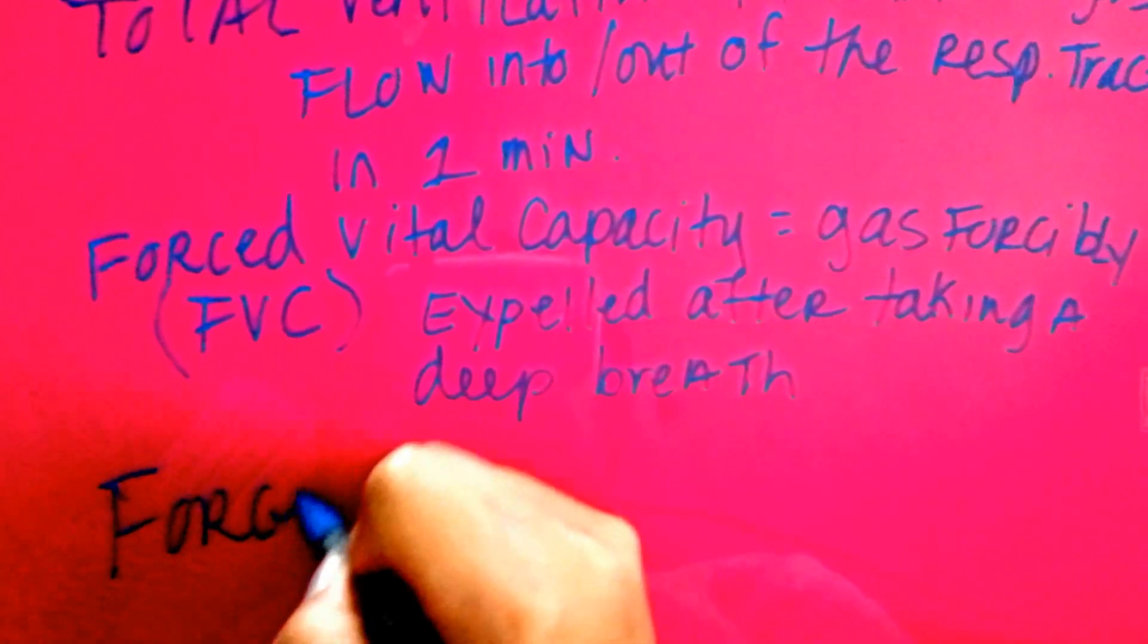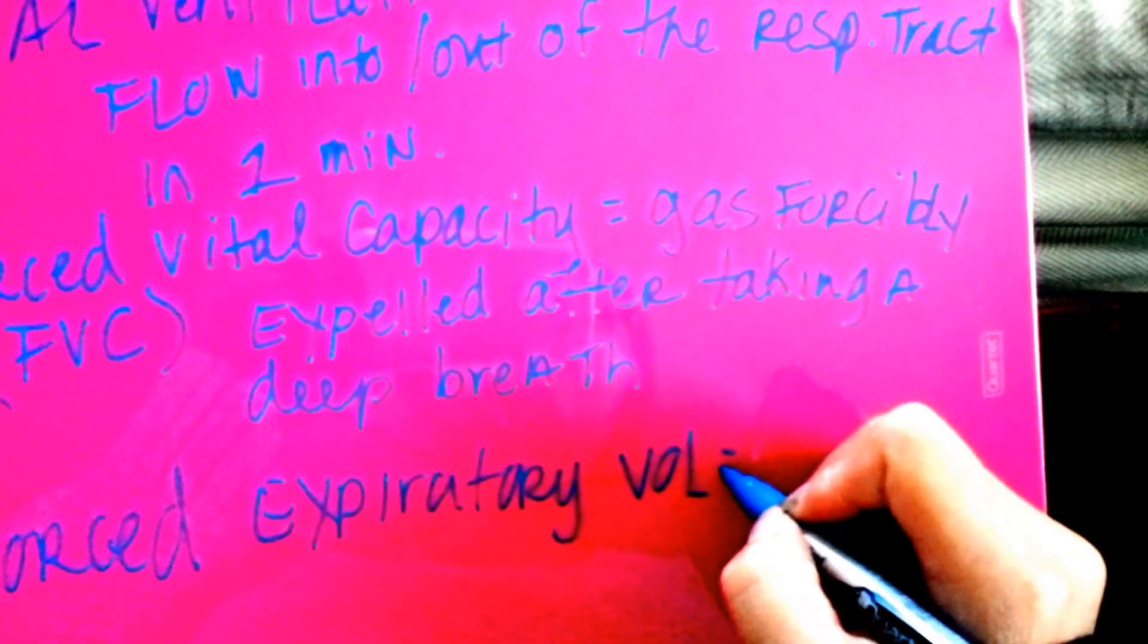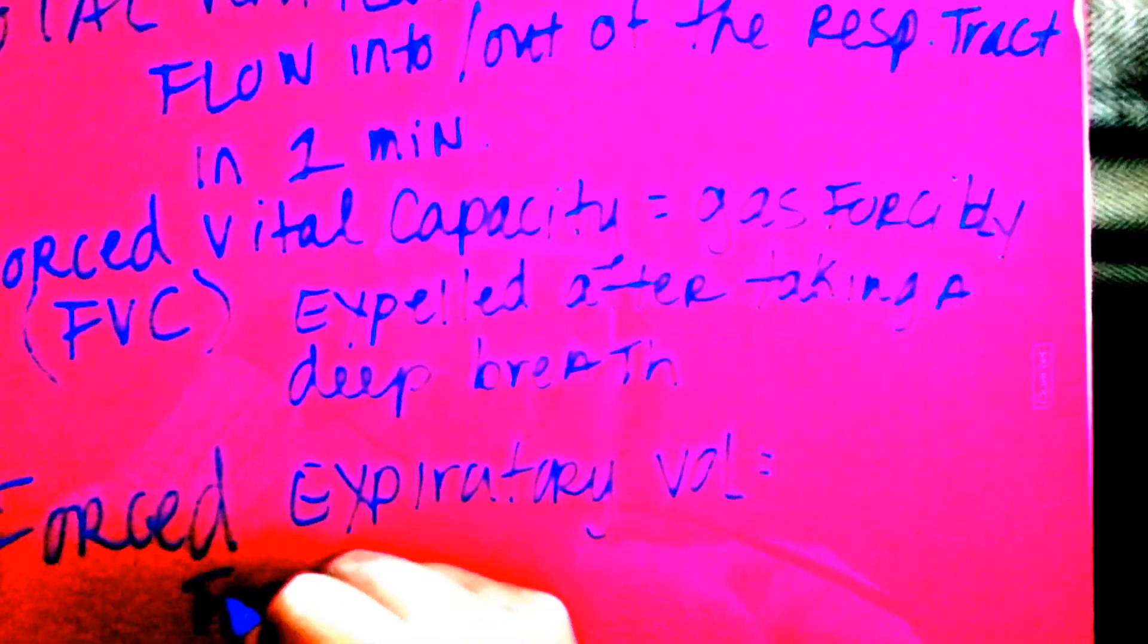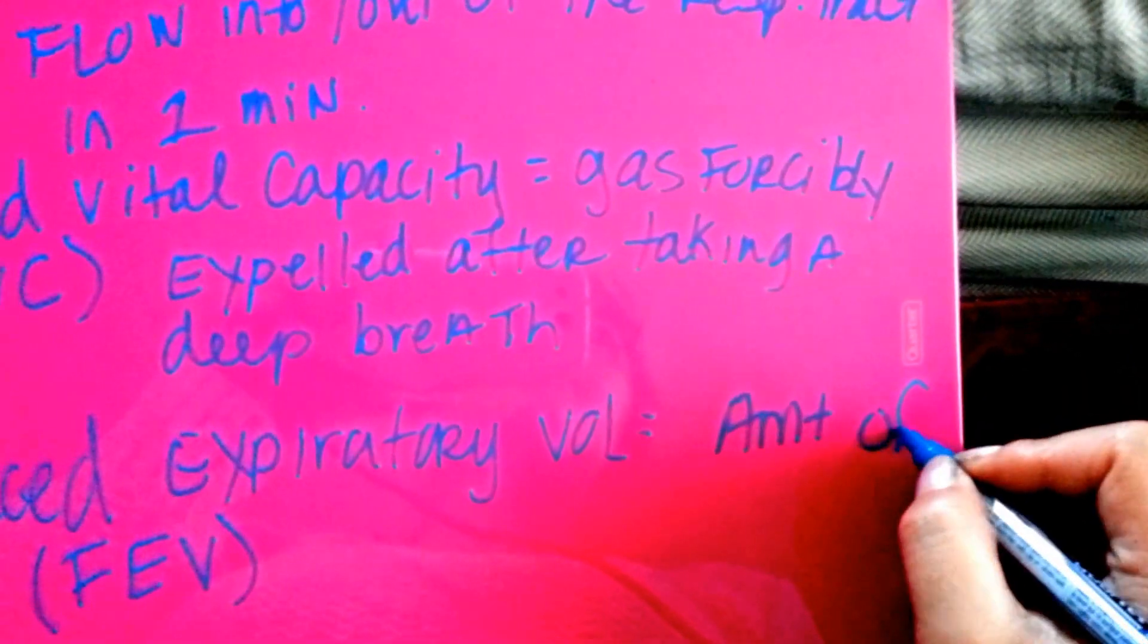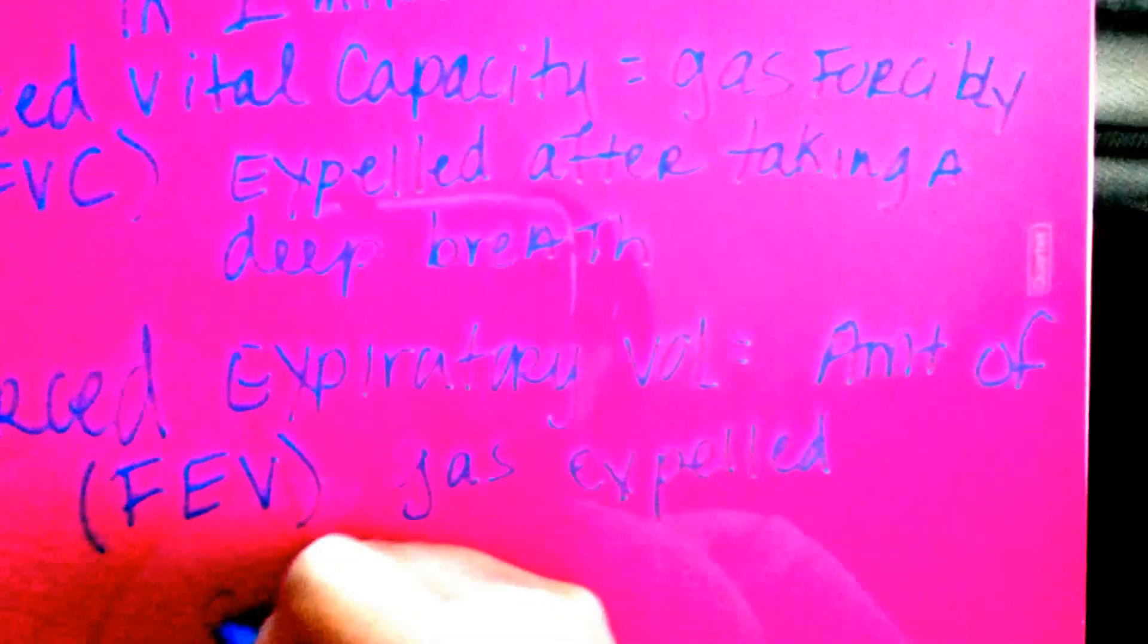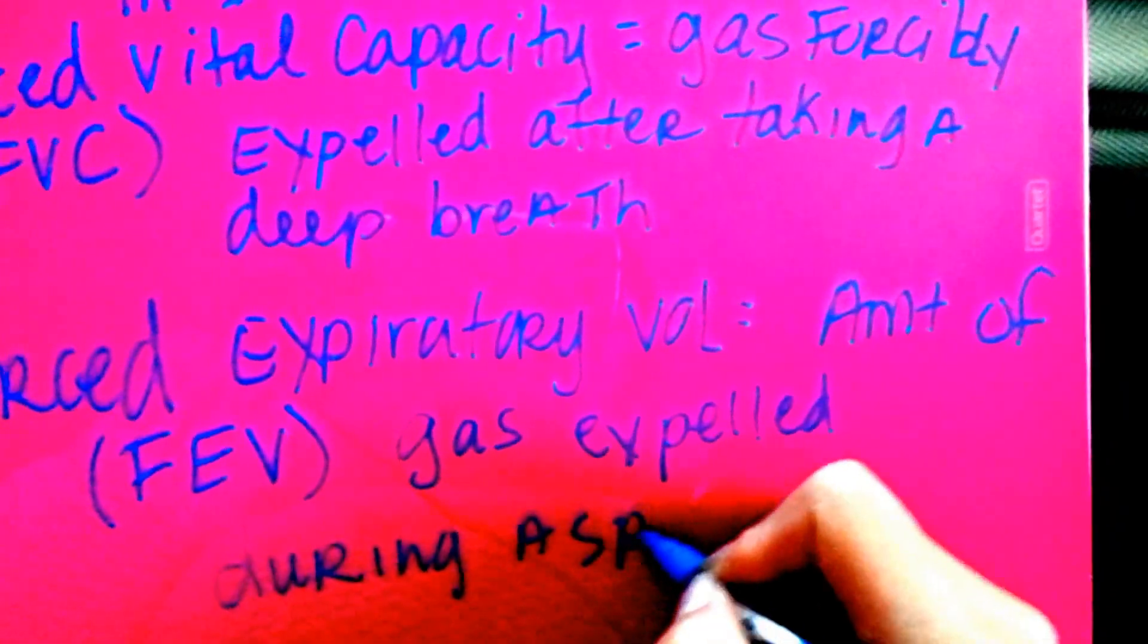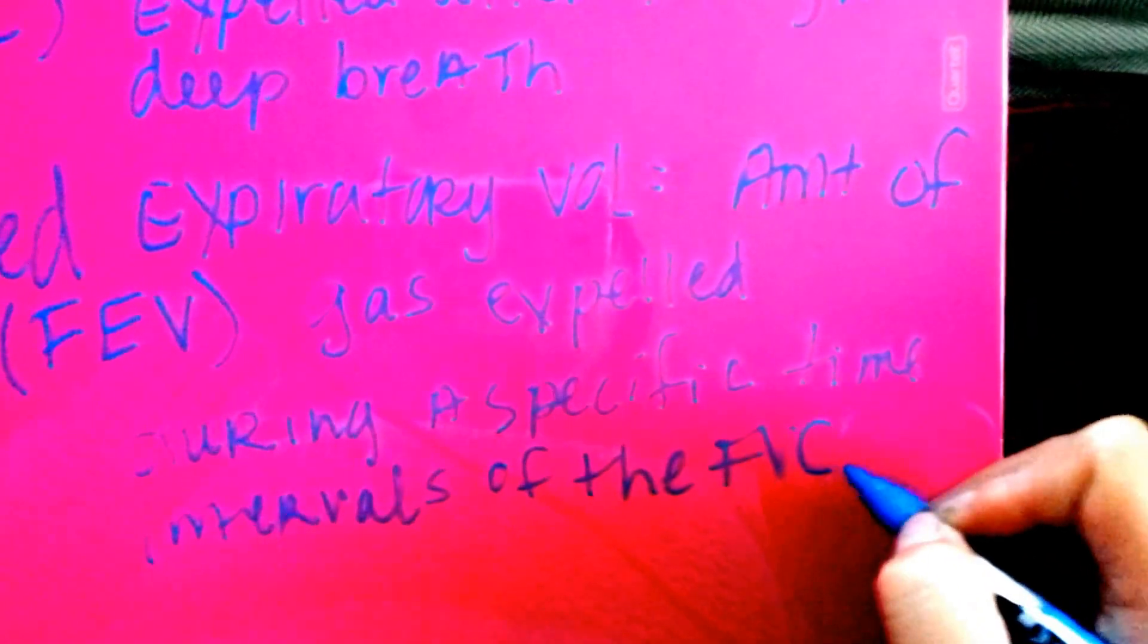The last one is going to be the forced expiratory volume. That is also known as FEV. The definition is the amount of gas expelled during a specific time interval of the FVC. Again, forced expiratory volume, amount of gas expelled during a specific time interval of the FVC.